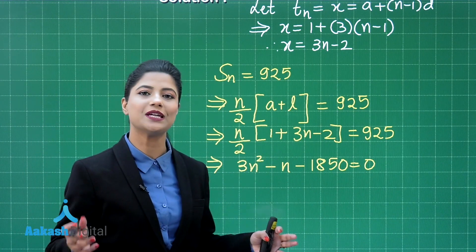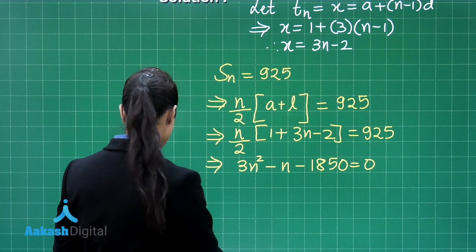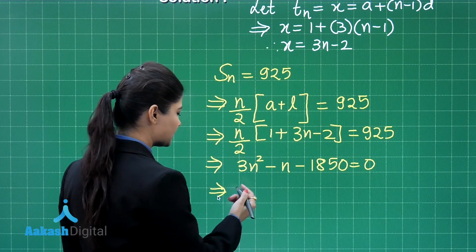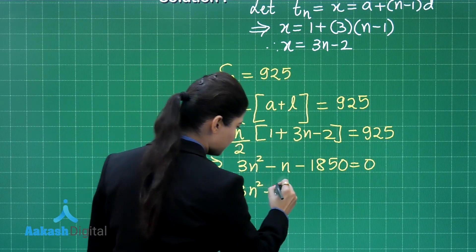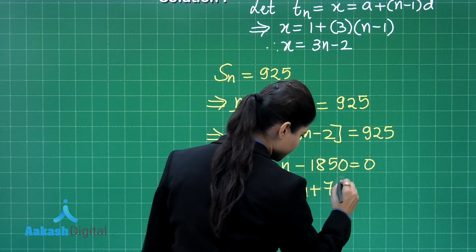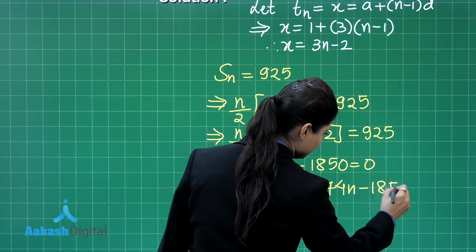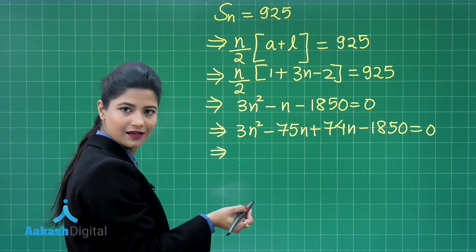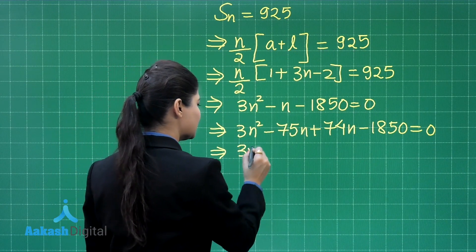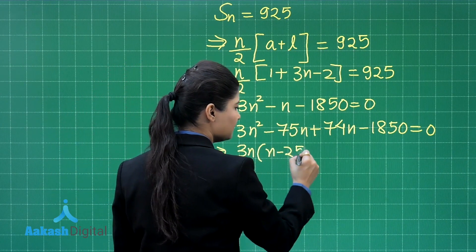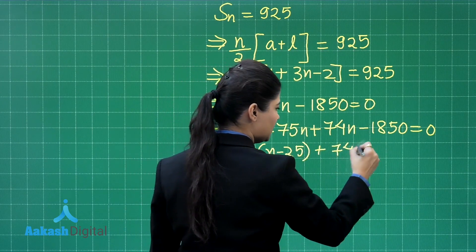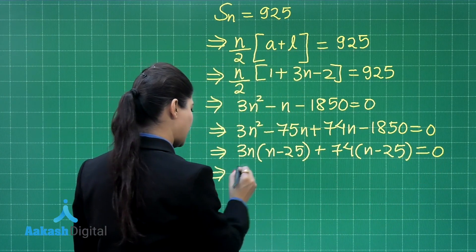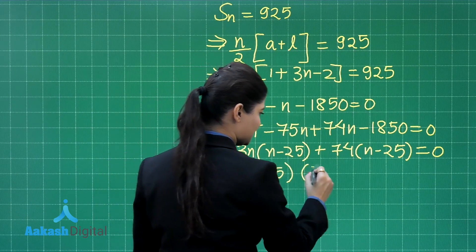We need to factorize this quadratic to obtain the value of n. With 3 and 1850, we can split the middle term as minus 75n plus 74n. Taking 3n common from the first two terms gives (n minus 25), and taking 74 common from the remaining terms also gives (n minus 25). This results in two factors: (n minus 25) and (3n plus 74).